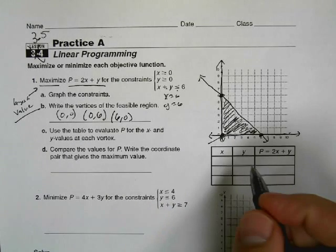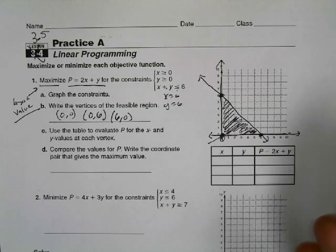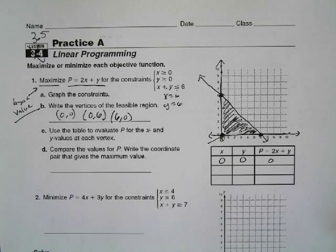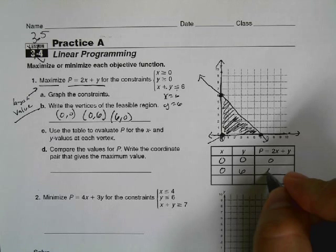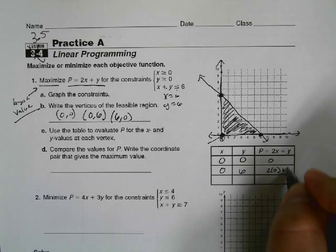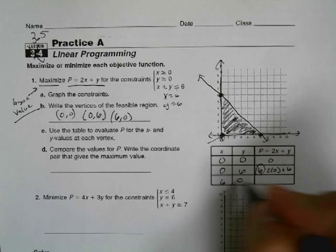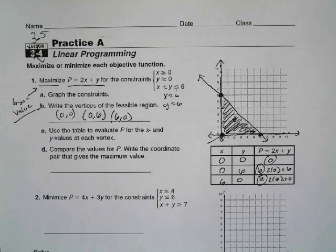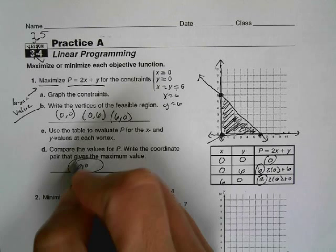So we're going to use the table to evaluate the profit, or not profit because there's no application behind it. But when we have zero and zero for x and y, we get zero for P. When we have zero and six, P is going to equal two times zero plus six. So we're going to equal six. When we have six and zero, we're going to equal two times six plus zero, which is twelve. So we have zero, six, and twelve. The pair that gives the maximum value is six and zero.